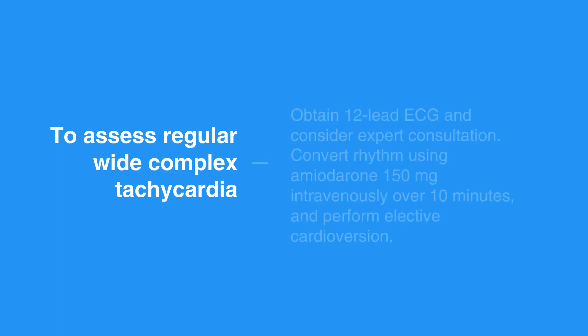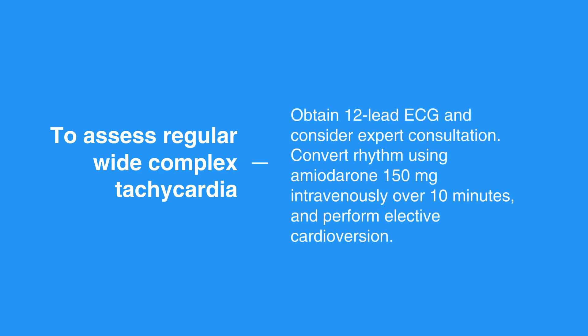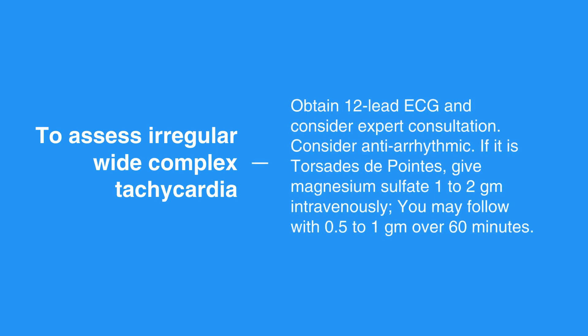To assess regular wide complex tachycardia, or probable VT, obtain a 12-lead ECG and consider expert consultation. Administer an antiarrhythmic. If it is Torsades de Pointes, give magnesium sulfate 1–2 grams intravenously. Additionally, you may follow with 0.5–1 gram over 60 minutes.